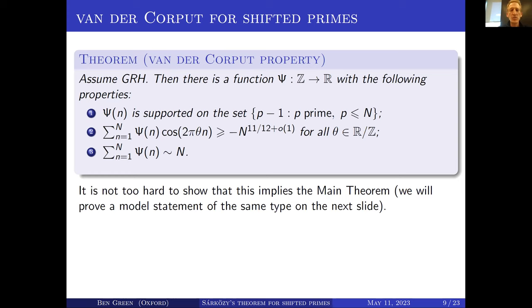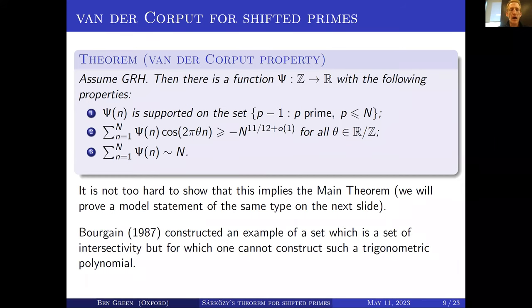I won't actually prove that in this talk, but I do want to show you a model statement of the same type which gives the rough idea. And before going on, let me remark that the van der Corput property — having a function supported on your set with an essentially positive Fourier transform — implies being intersective, but it's actually strictly stronger, because Bourgain constructed an example of a set that is intersective but which doesn't have this van der Corput property.